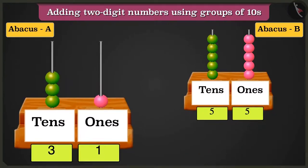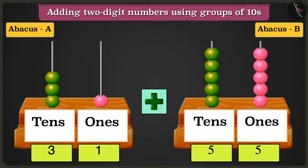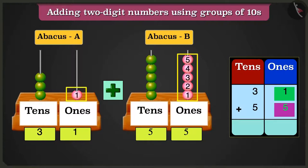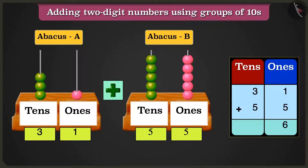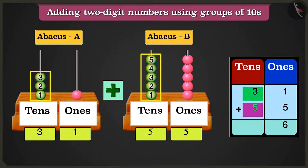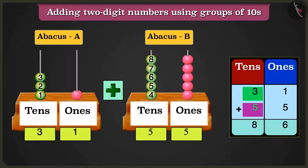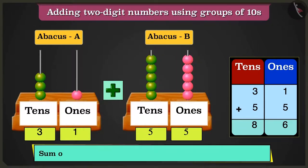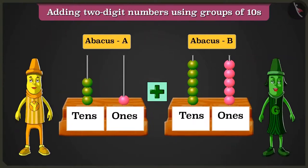Now tell me, if the numbers in abacus A and abacus B are added, what will be the answer? To add both numbers, we will write them in the table of tens and ones. We will add the ones box first: one one added to five ones will make six ones. Now in the box of tens, adding three tens and five tens — count after three: four, five, six, seven and eight tens. So we have eight tens and six ones. Abacus A and abacus B added together give us the number eighty-six.